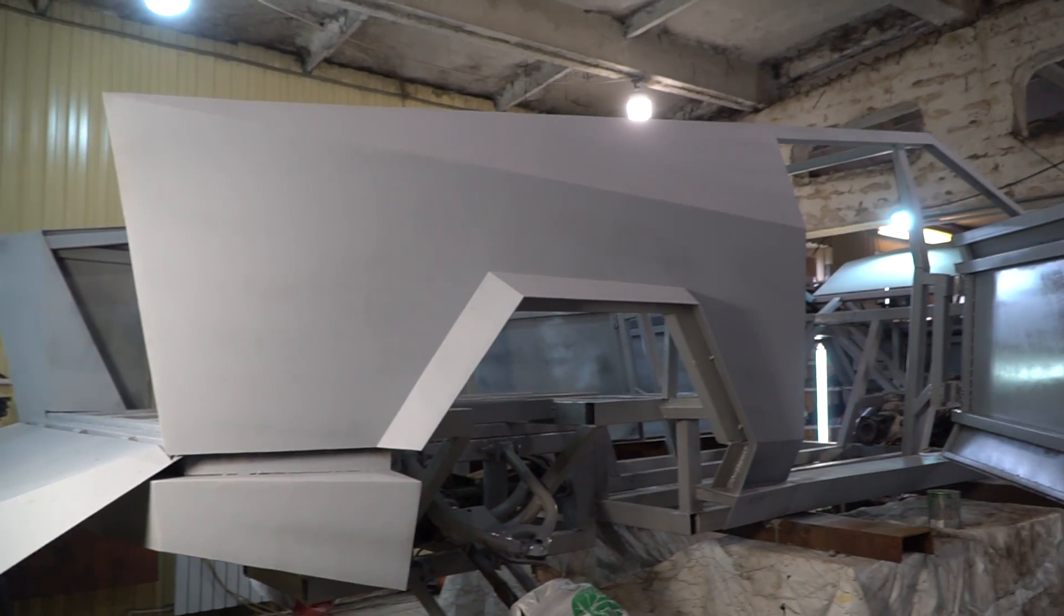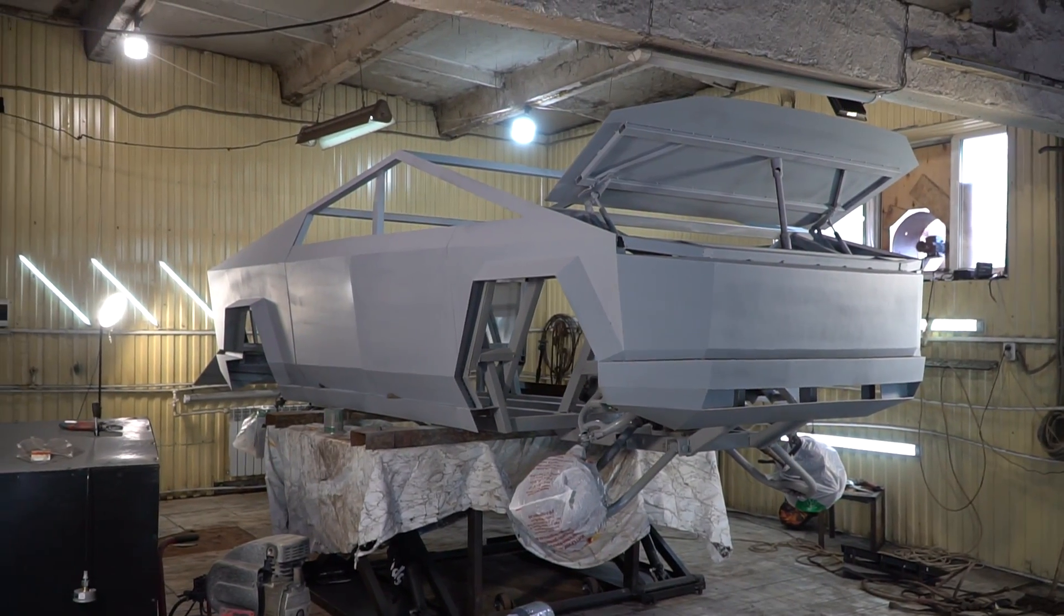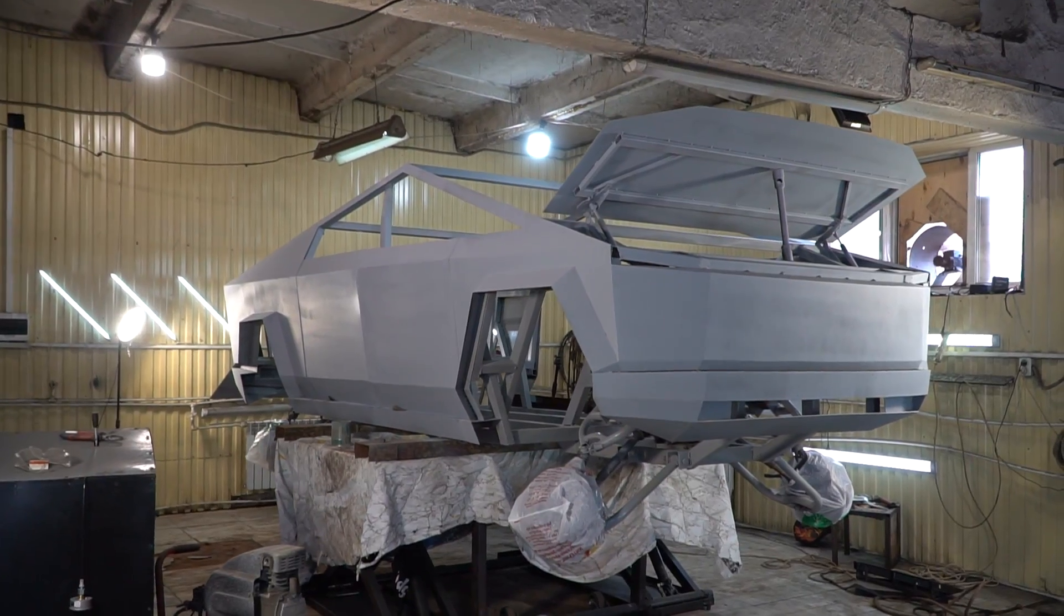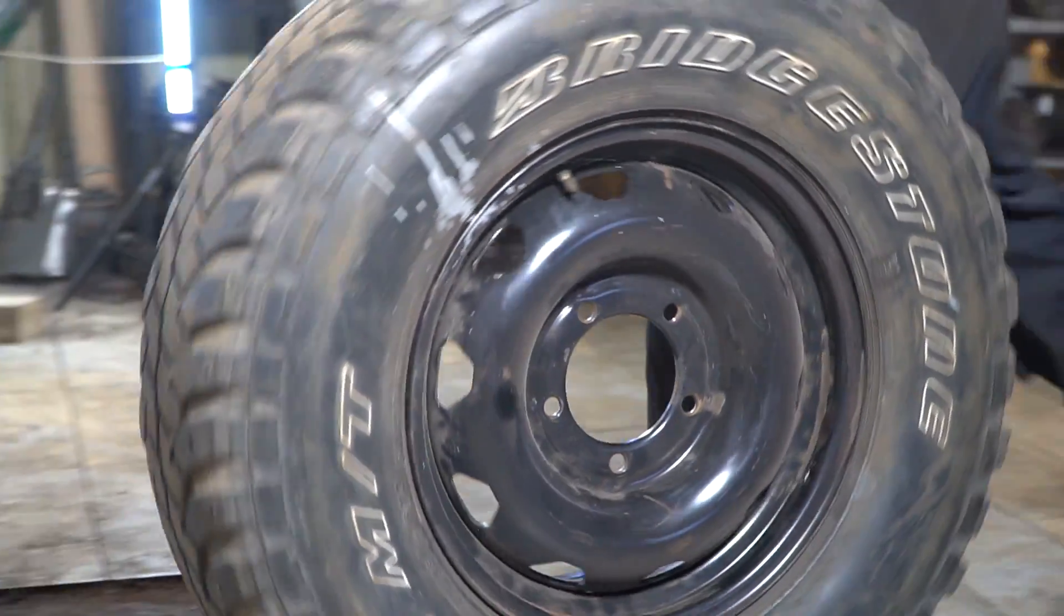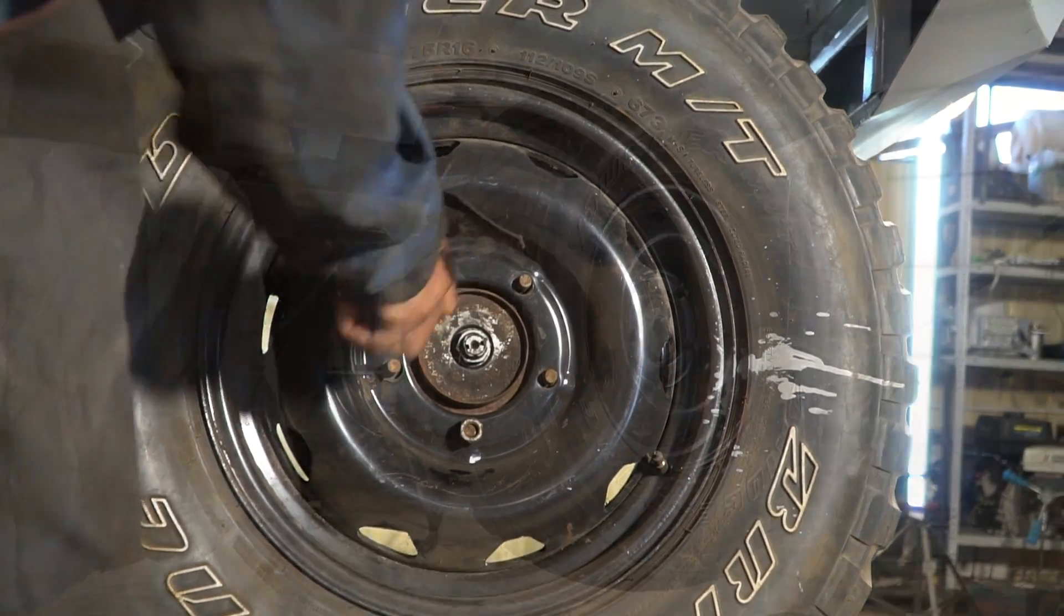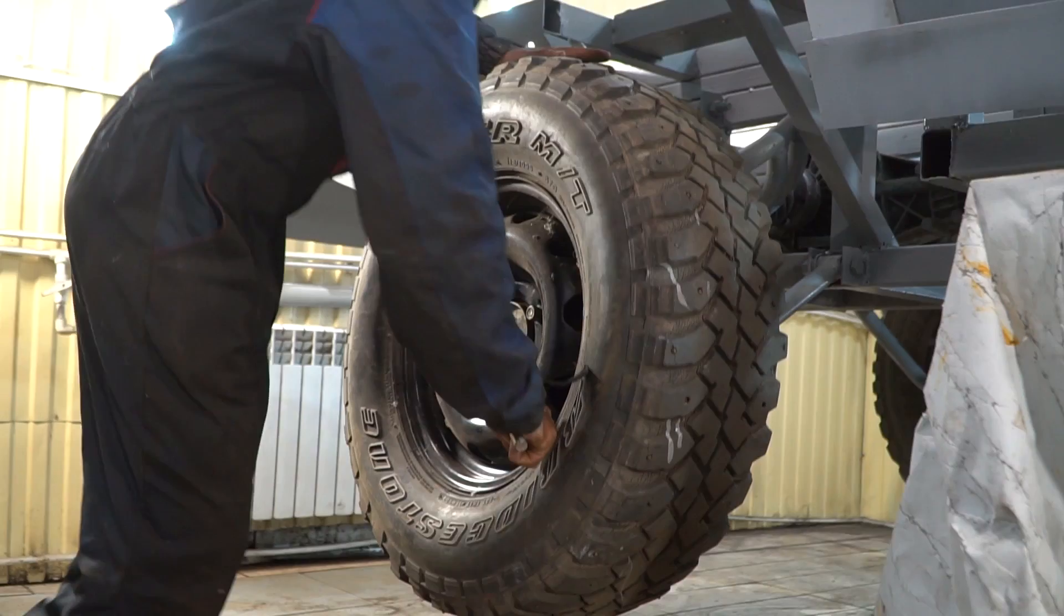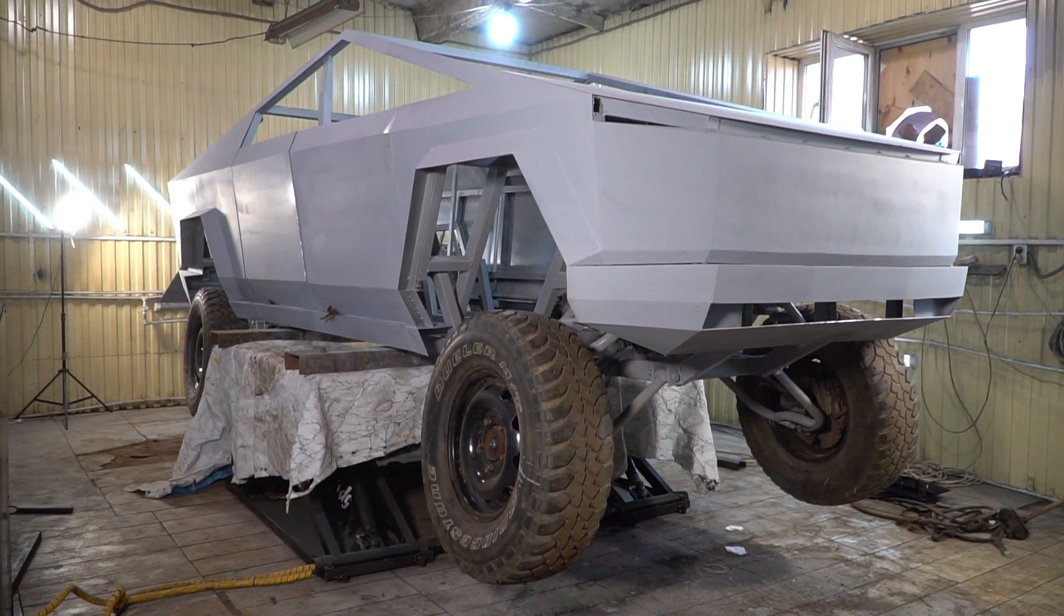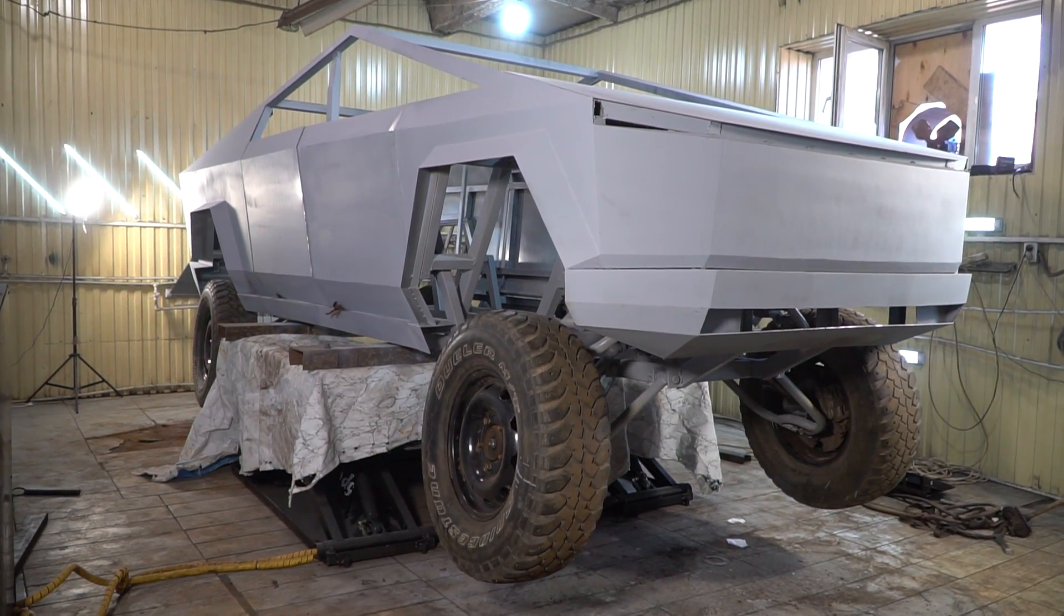Hi everyone, in this series we continue working on the Cyber Truck. In the previous part, the body was completely welded, cleaned of rust, and primed. Now the priming is dry and we need to install the wheels and lower the Cyber Truck. By the way, how do you like such big wheel travel? I hope it'll be possible to keep it in the future.